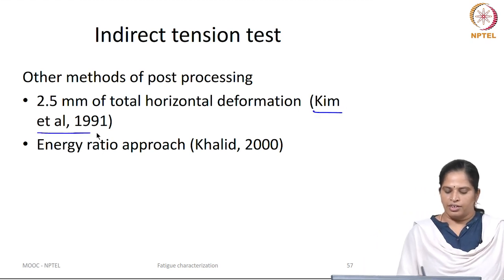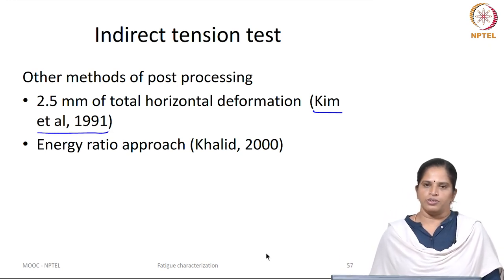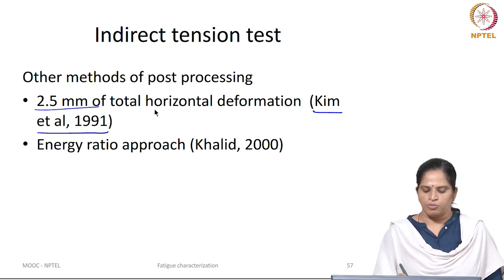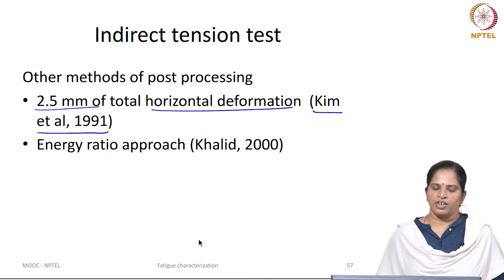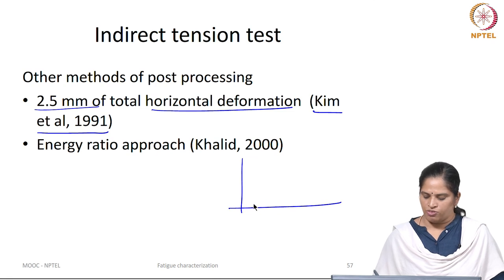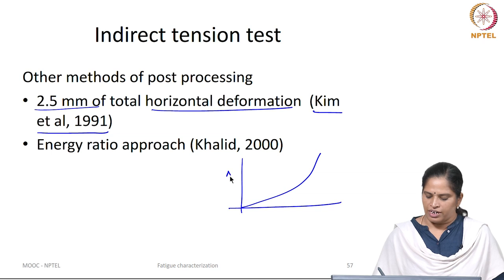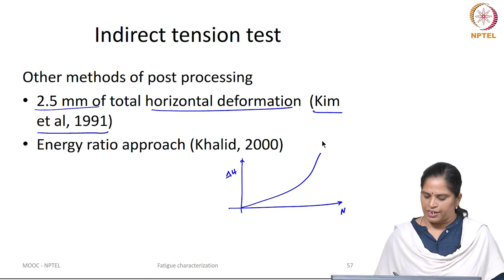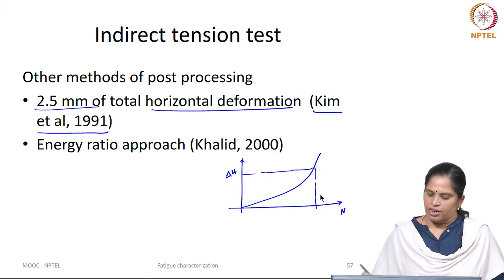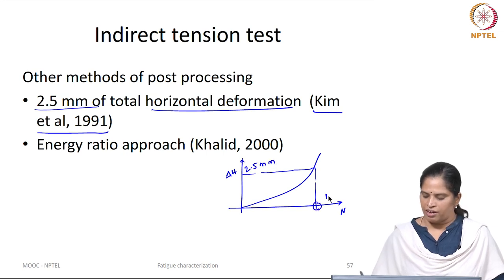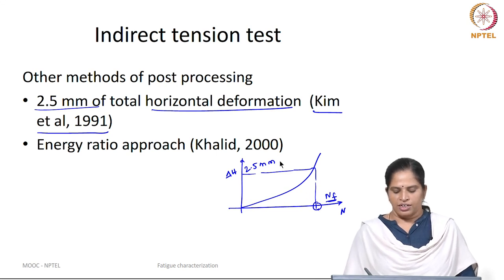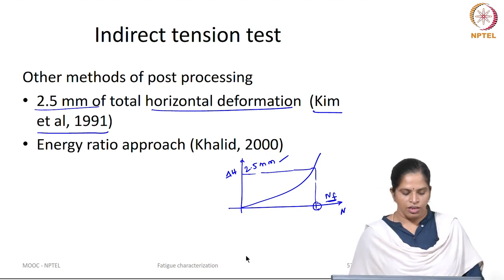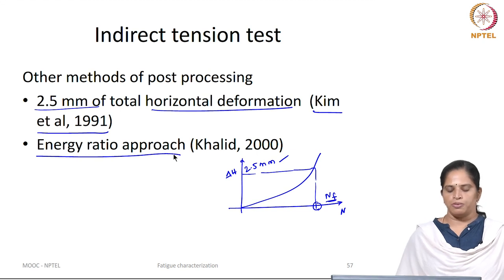For example, Chem Ital recommends identifying the fatigue life as the number of load cycles corresponding to 2.5 mm total horizontal deformation. Subject the sample to repeated loading and identify the point where the horizontal deformation delta H reaches 2.5 mm. The number of cycles corresponding to that deformation of 2.5 mm is the NF, which corresponds to the fatigue damage in the mixture.